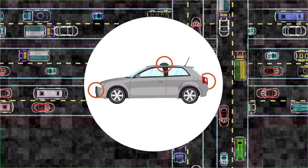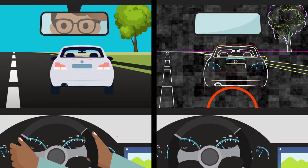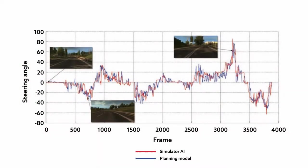The planning model is trained on all of the collected data, mimicking the movements of both the human driver and the simulator's own AI. Initial steering tests showed that the model could accurately reproduce the AI's driving performance along a stretch of virtual road.